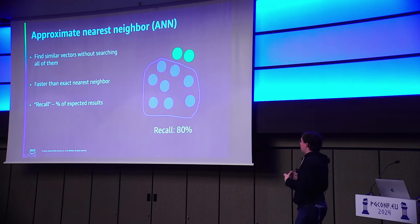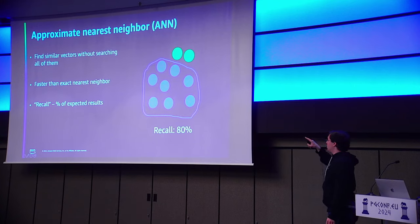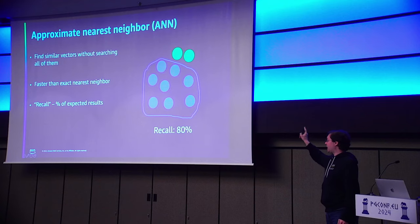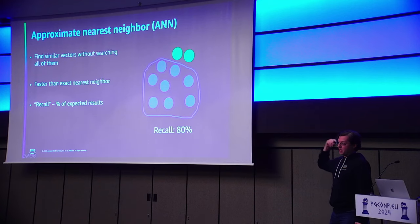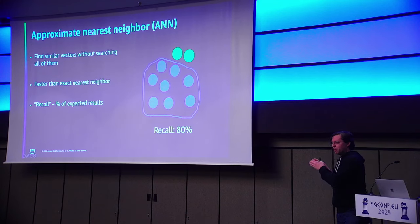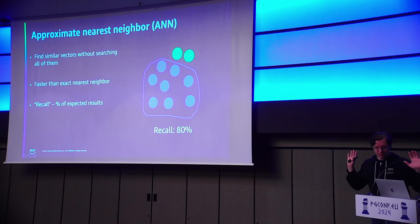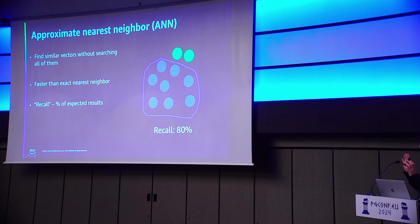When I do the best practices version of this talk, everything revolves around recall. Recall is a measurement of the expected number of results you're going to return. So if in an exact nearest neighbor search I'm supposed to return 10 vectors but only return eight of them, my recall is 80%. Recall is really the ultimate measurement of quality. You could say you're getting 10,000 queries per second, but if your recall is 20%, you're basically not getting good results. You always have to measure everything against recall.